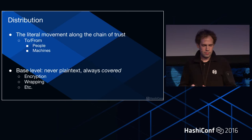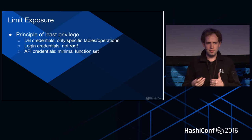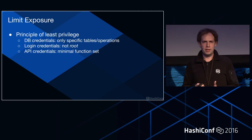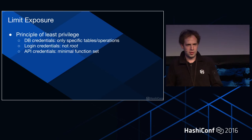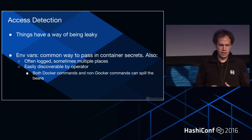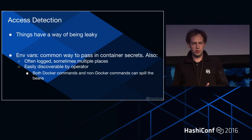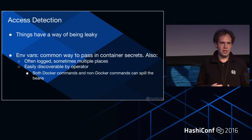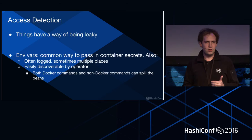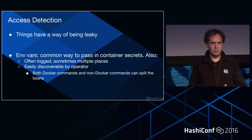We want to limit exposure — principle of least privilege. If you don't have access to something, you can't disclose it. Anything that has access to secrets should only have access to the secrets they need — only the database tables or login credentials they need. Regarding access detection: things have a way of being leaky. For instance, environment variables — many Docker images say 'pass your password as an environment variable,' but those environment variables are very easy to see with Docker inspect, or they get logged to access logs. You don't want to have passwords inside your environment variables.